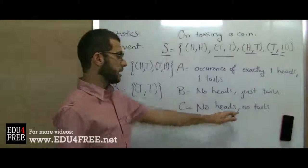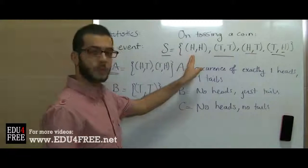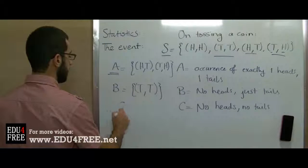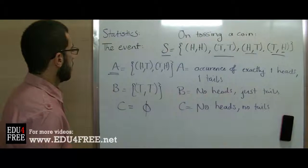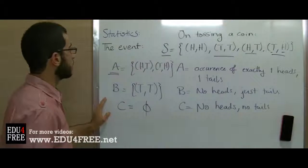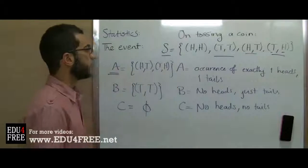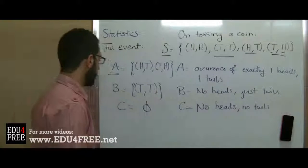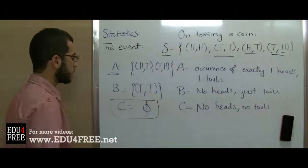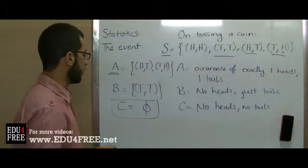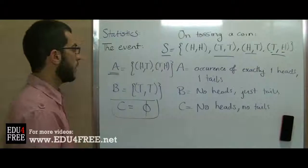C: no heads, no tails. This is not found in the sample set. So simply C equals phi. All these are events that are related to the sample set of tossing a coin twice. So the event C which is phi is called an impossible event because it's impossible to happen, because this condition is not applied on the random experiment that we have here.